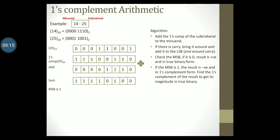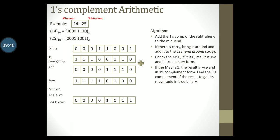In this case the MSB is 1. Since it is 1, we conclude that the result is negative and in 1's complement form. We need to find the 1's complement of the result to get its magnitude in true binary form. Finding the 1's complement by inverting the bits, we get 00001011. Converting this to decimal gives 11. Don't forget to put the negative sign since the answer is negative. So the result is minus 11. To confirm: we are subtracting 14 minus 25, the first number is smaller than the second, so a negative answer is expected. 14 minus 25 is indeed minus 11 in decimal.